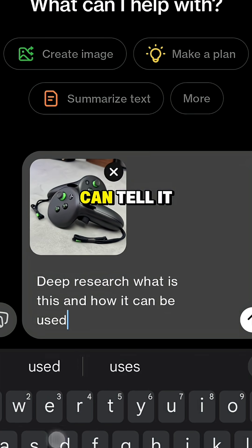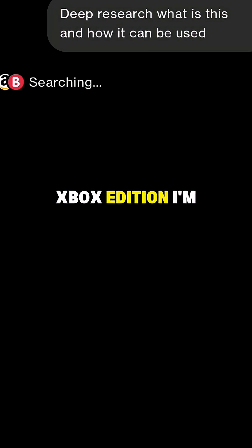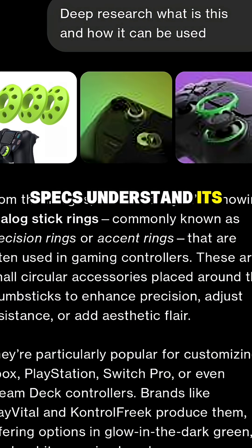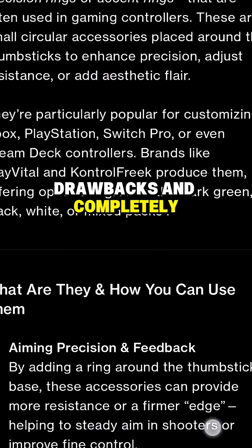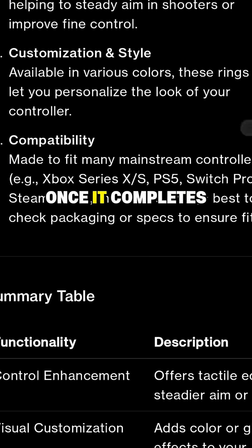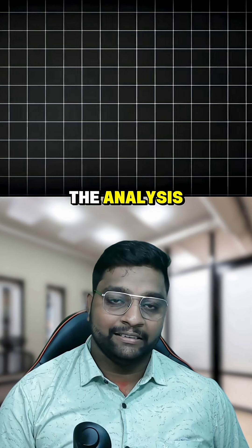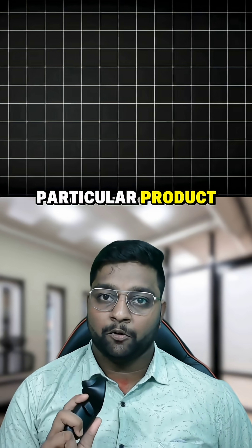Then you can tell it — since it doesn't have any context or knowledge about this particular product — you can tell it: 'Please research over the internet about Meta Quest 3S Xbox edition. I'm planning to buy it. Understand its specs, understand its advantages, drawbacks, and completely analyze the product.'